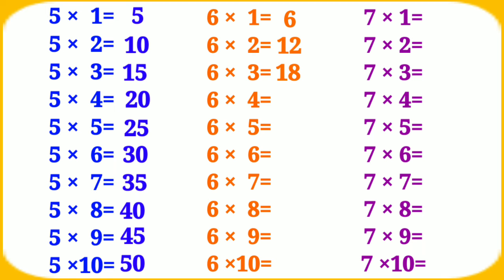6 fours are 24, 6 fives are 30, 6 sixes are 36, 6 sevens are 42.